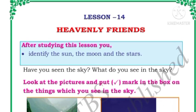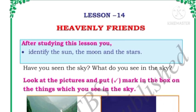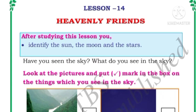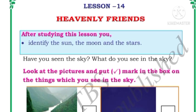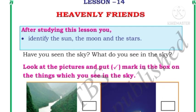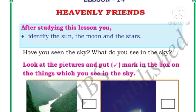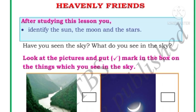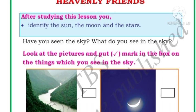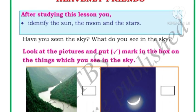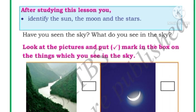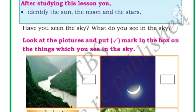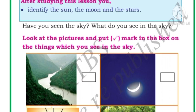Welcome back, dear viewers. In this video we are going to study lesson number 14 of Grade 1 EVS, that is Heavenly Bodies. In this lesson we will identify the sun, the moon, and the stars. Have you seen the sky? Yes, of course you see the sky every day. What do you see in the sky? Let us study.